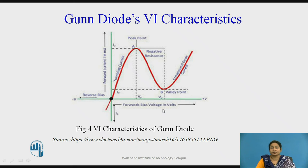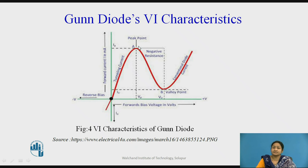If you observe the VI characteristics of the Gunn Diode, initially as the voltage increases, the current also increases. As seen in this diagram, the current increases linearly with voltage until the peak point. After that peak voltage, the current starts decreasing, and this forms a negative resistance in the device. The current decreases until a particular voltage called the valley point voltage. After the valley point voltage, the current starts increasing again. In this way, there are current fluctuations in the device, which create oscillations. That is why these devices can be used as an oscillator for generating frequencies in the microwave range.